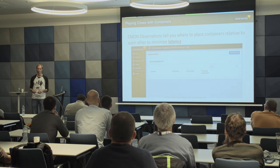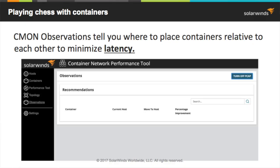We've also built a function into the free tool called Observations. You deploy your application, let it run, and the tool will observe it and recommend an optimal deployment — suggesting whether you should move containers to different servers. If two containers are talking a lot and need to be close together, Observations will recommend they be placed on the same server or host if possible, or on hosts with minimal latency between them. This gives you handy recommendations about how to deploy your containers.